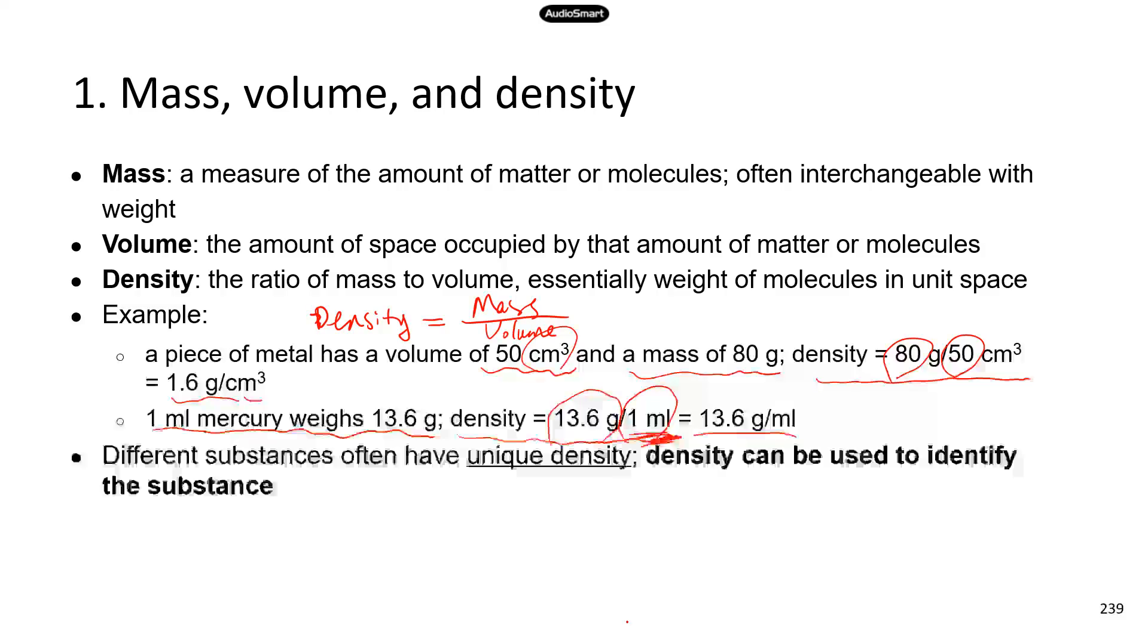Now, different substances have unique densities. So density can be used to identify a particular substance, because different materials are supposed to have different densities. So once you have the density information, you can use that to figure out what material, what substance it is. Okay, now let's look at some practice questions.